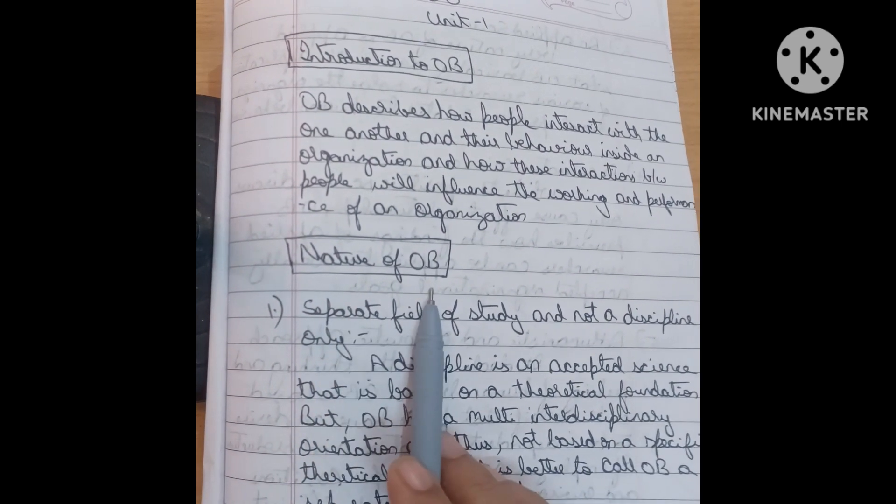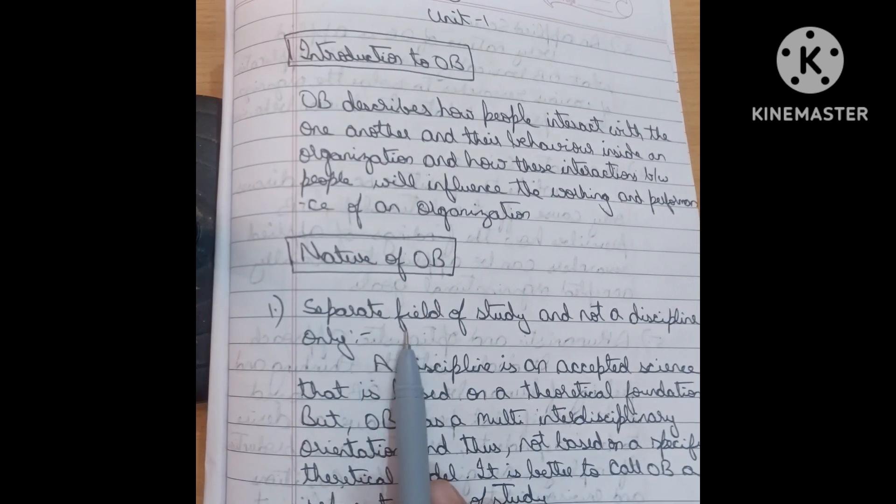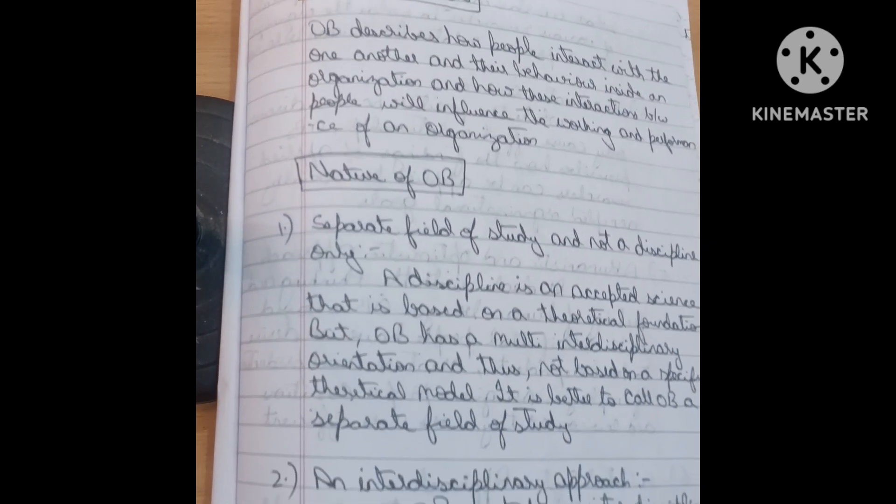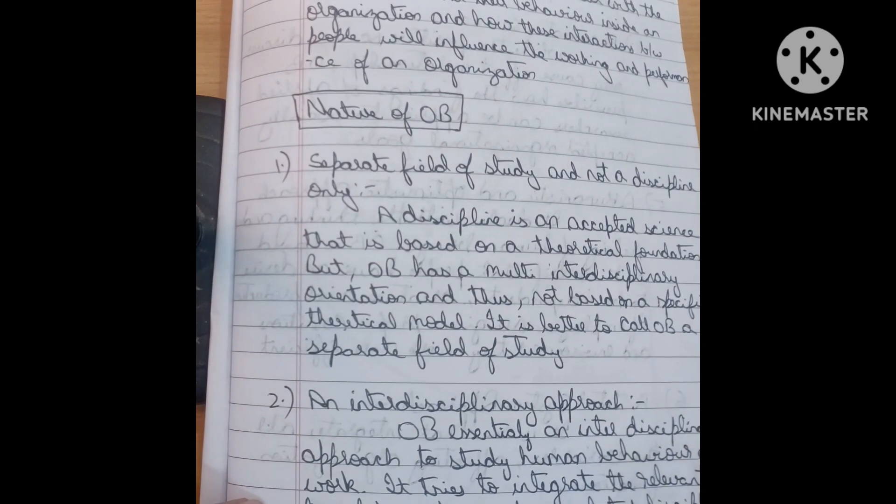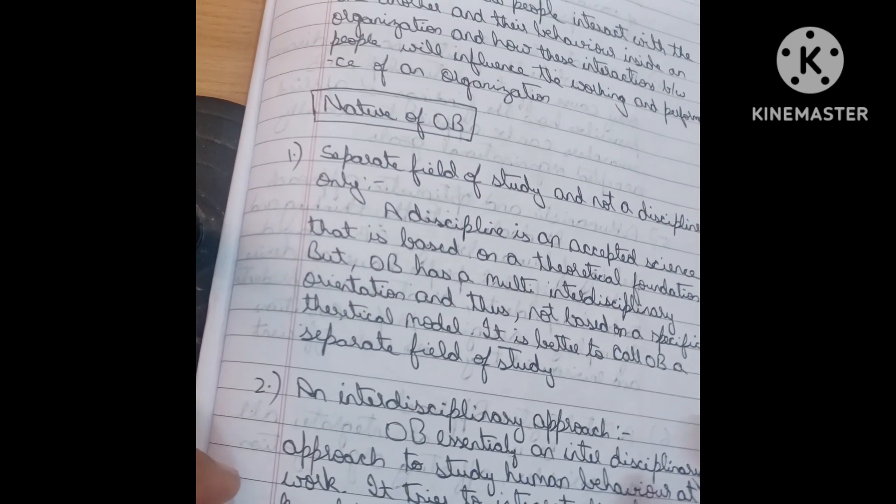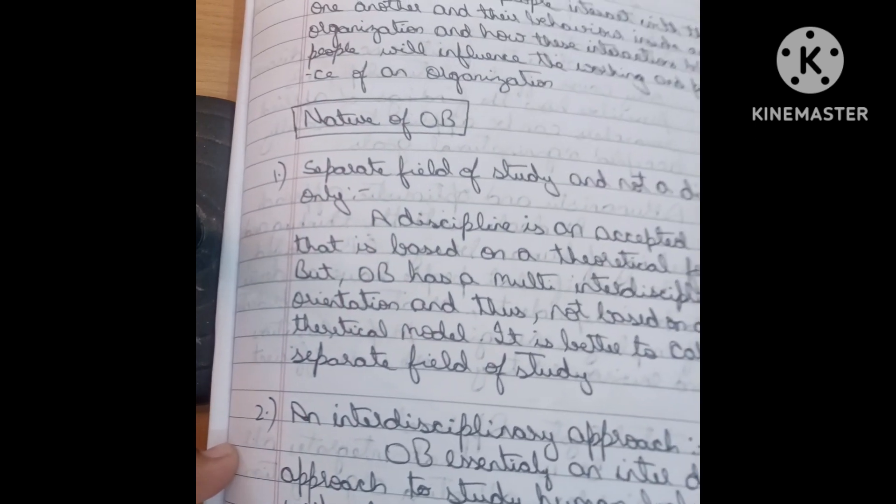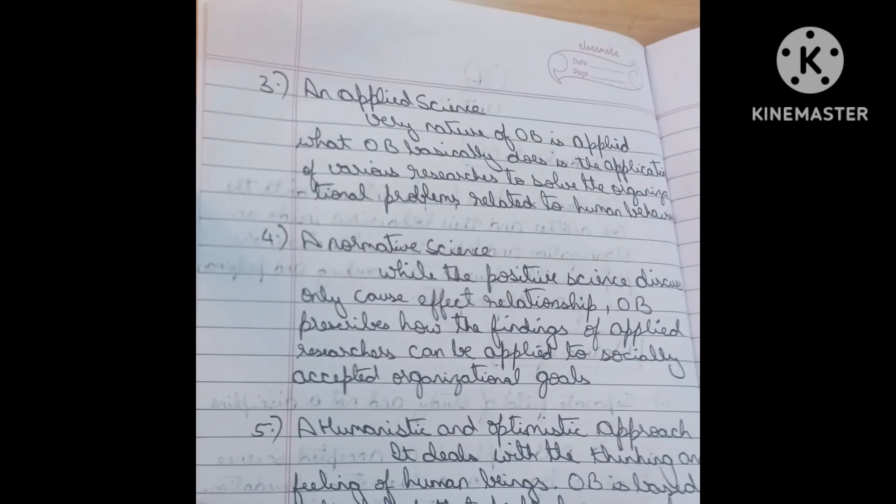Next one is nature of OB. Explain the nature of OB means side heading is first to say it is a separate field of study and not a discipline only. Second one is an interdisciplinary approach. I will keep these notes in the description box. Read these concepts for examination purpose. It is not a separate field, it is just a separate field and it is an interdisciplinary approach.